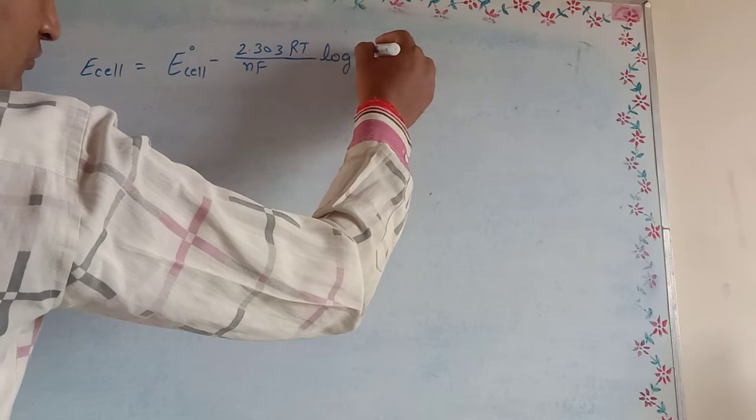This can also be written as: E_cell = E°_cell - (2.303RT/nF) log([C]^c[D]^d / [A]^a[B]^b), where products are in the numerator and reactants in the denominator.